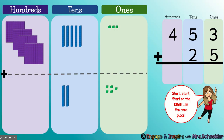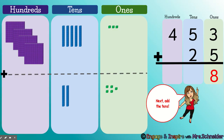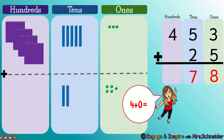We're going to start on the right in the ones place. We know that 3 plus 5 equals 8. Now we're going to add the tens: 5 tens plus 2 tens. Remember, it's easier to say 5 and then keep counting — 5, 6, 7. So 5 plus 2 is 7. And then we're going to add our hundreds: 4 hundreds plus — there's nothing here, so that means 0. So 4 plus 0 equals 4. So 453 plus 25 equals 478.